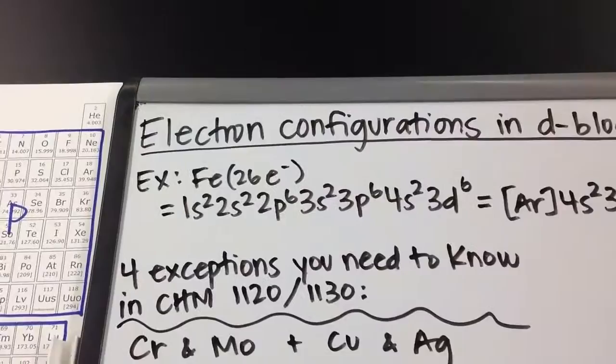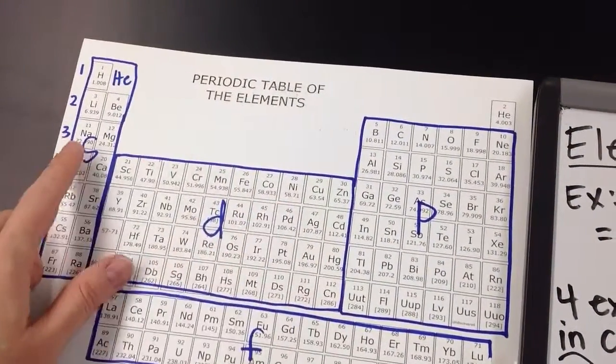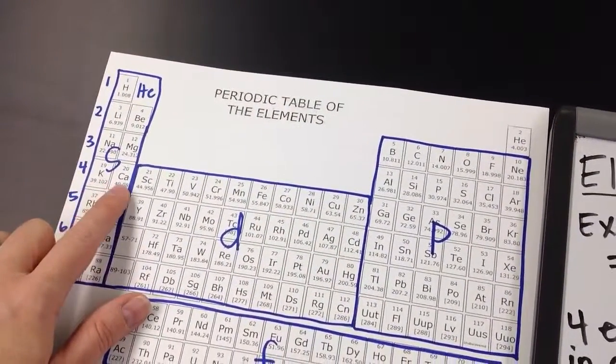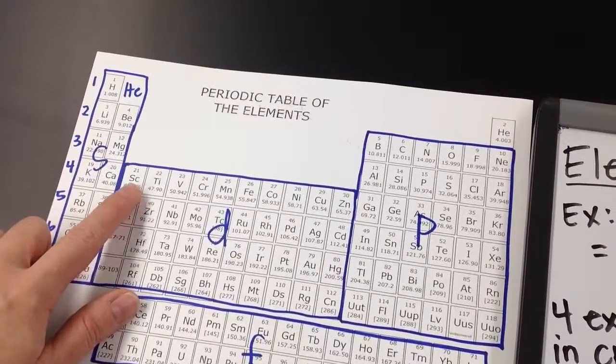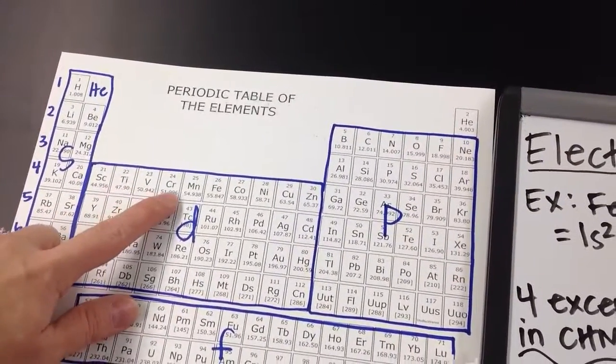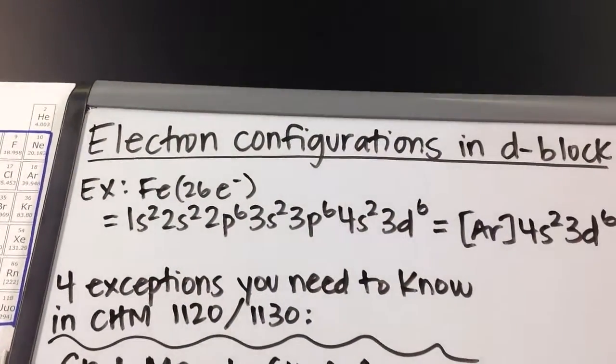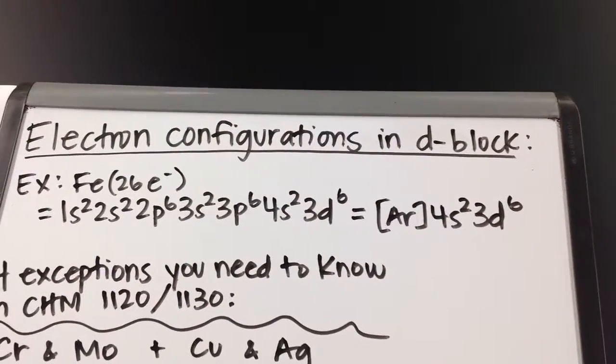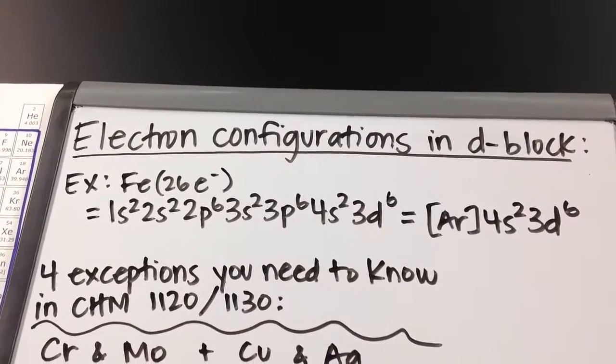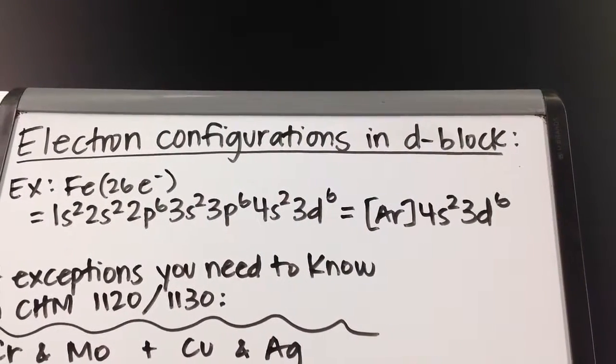For instance, if we were doing iron, when we're going across, we're going into 4S2, then it's 3D 1, 2, 3, 4, 5, 6. So using the shorthand notation or the long notation, you're still going to represent that: 4S2, 3D6, or argon 4S2, 3D6.